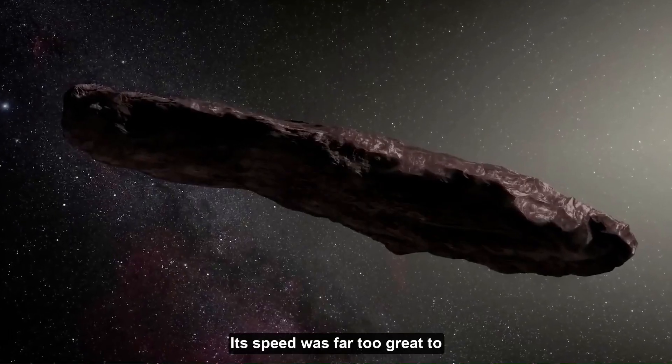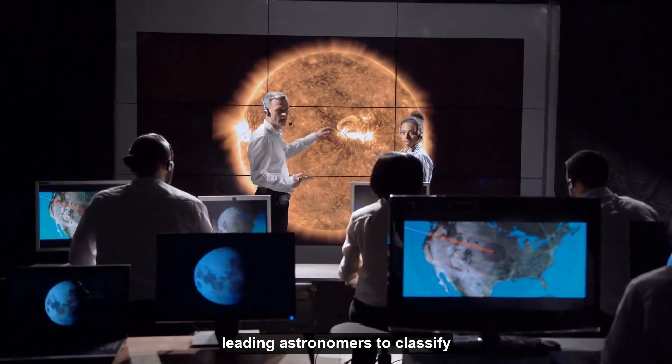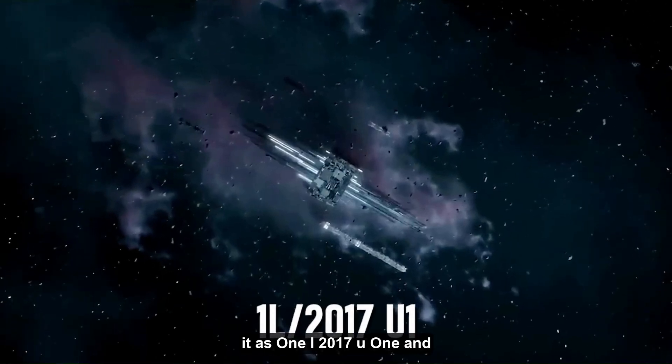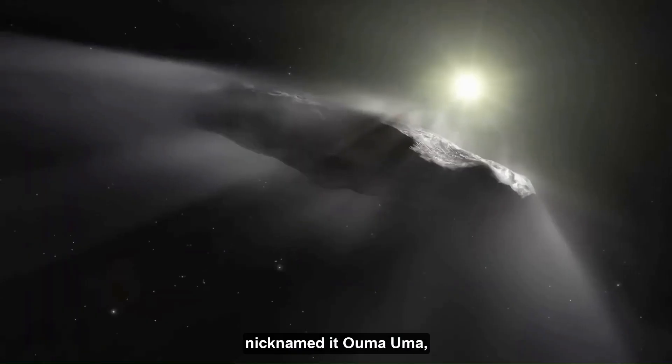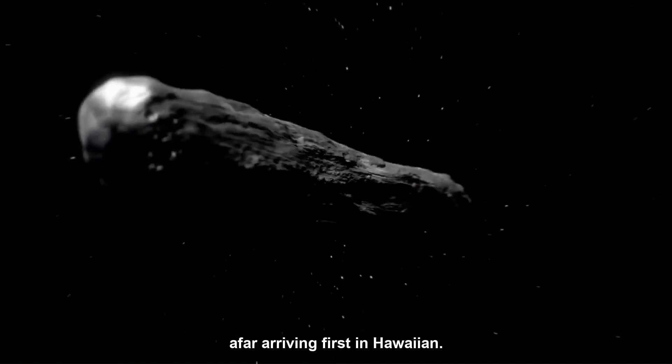Its speed was far too great to have come from within our solar system, leading astronomers to classify it as 1I/2017 U1 and nickname it Oumuamua, which means a messenger from afar arriving first in Hawaiian.